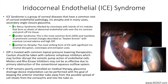IOP is treated with common topical pressure-lowering therapeutics, similar to other forms of glaucoma. Miotics and rho-kinase inhibitors may not be as effective due to primary obstruction of the conventional aqueous outflow system. Trabeculectomy has not been met with great success in such cases due to closure of the sclerostomy, and laser trabeculoplasty is also poorly effective. If IOP remains poorly controlled on medical therapy, glaucoma drainage device implantation can be performed, with the goal of keeping the anterior chamber tube away from the possible spread of cell sheets into the tube opening.